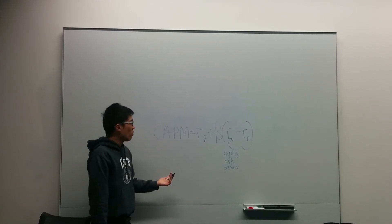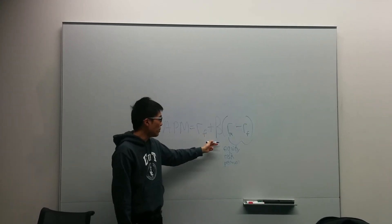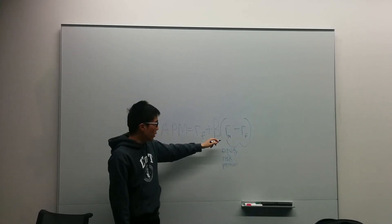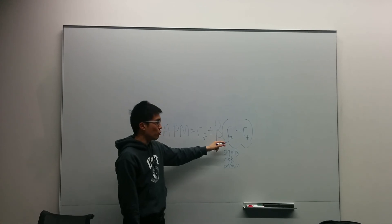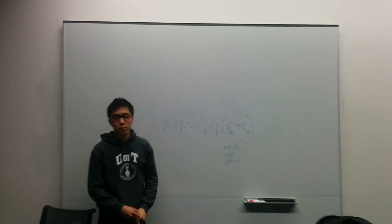That's pretty much it. It's a pretty straightforward formula. Just memorize that it's the risk-free rate plus the beta multiplied by the equity risk premium. The risk premium is the excess return of the market portfolio over the risk-free rate. And that's it. Thank you.